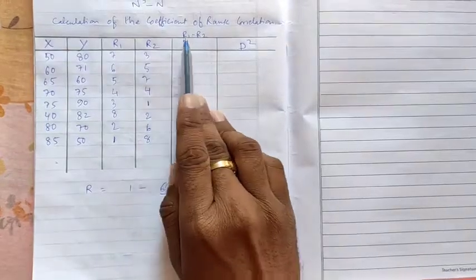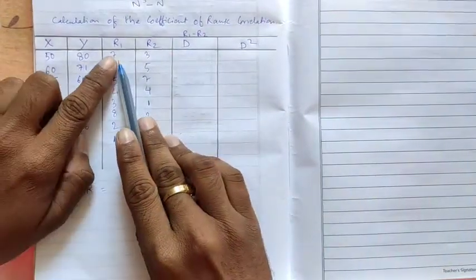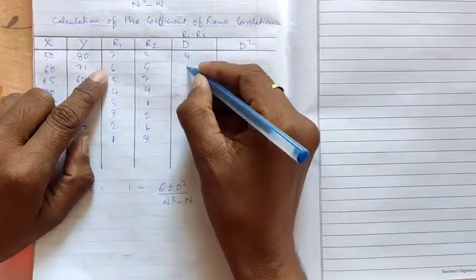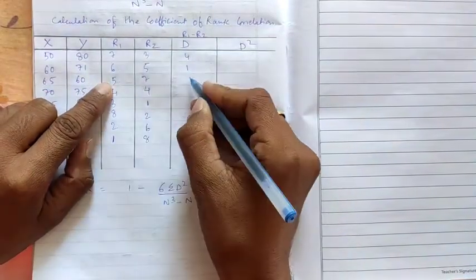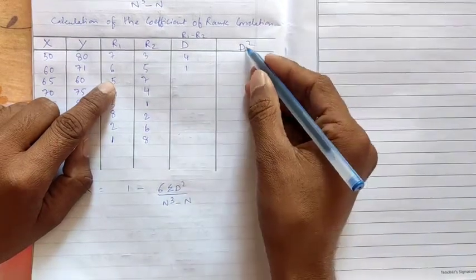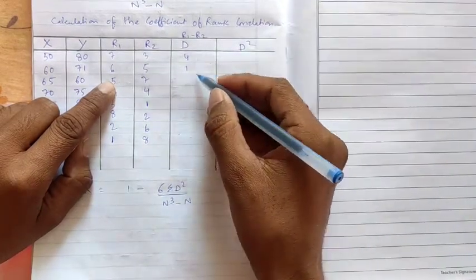So now how to find d? r1 minus r2. So 7 minus 3. How much? 4. 6 minus 5, 1. 5 minus 7, it's minus 2. But you can ignore minus also. Why? Because when you are squaring the d we don't want. So minus we can ignore.